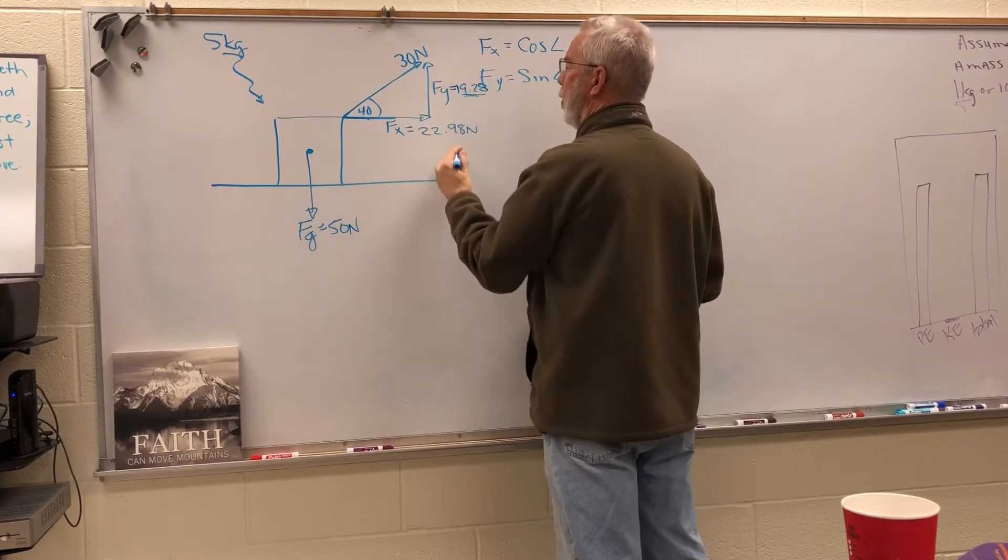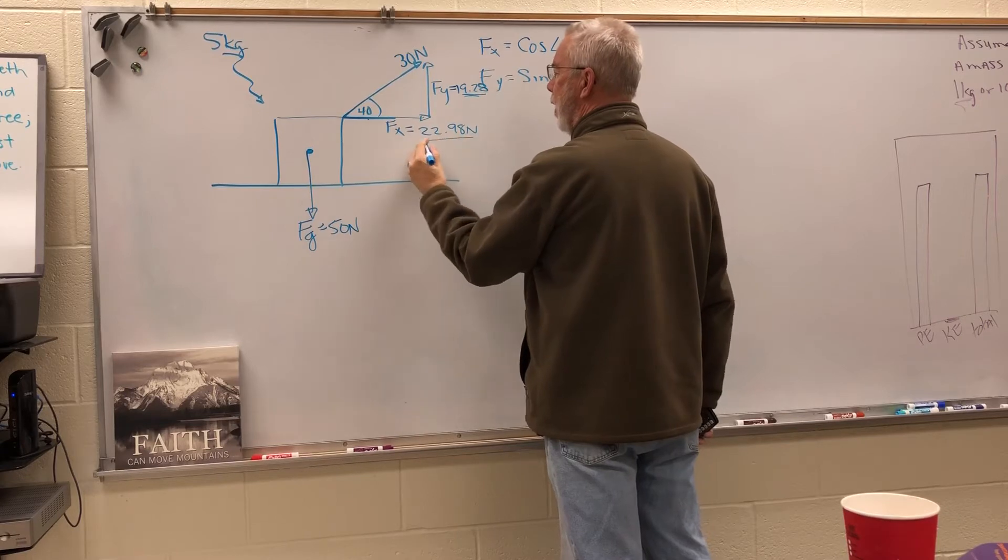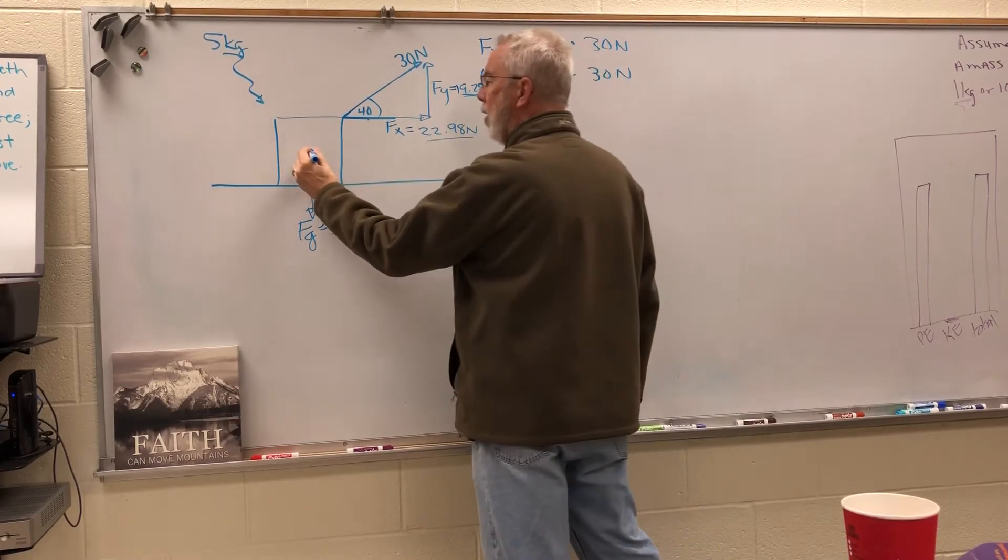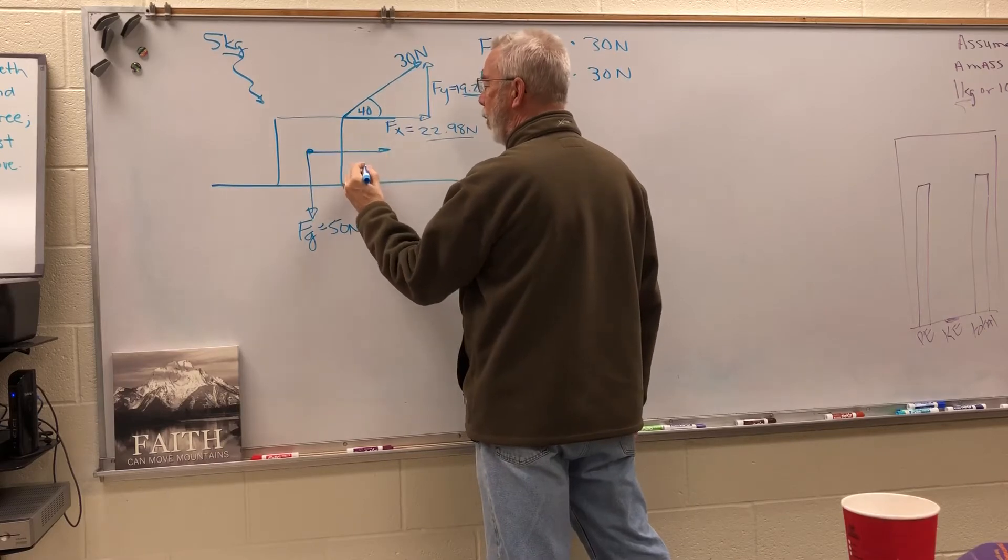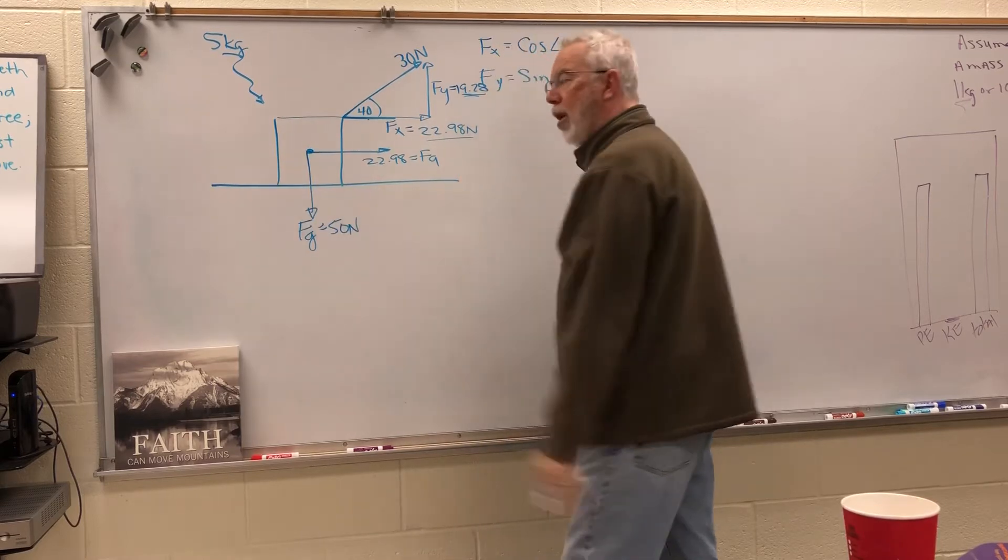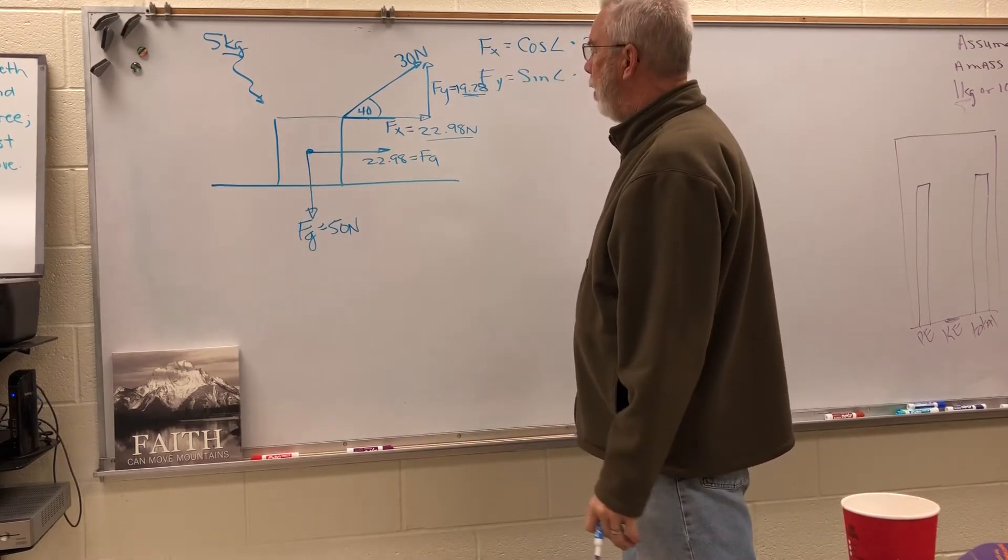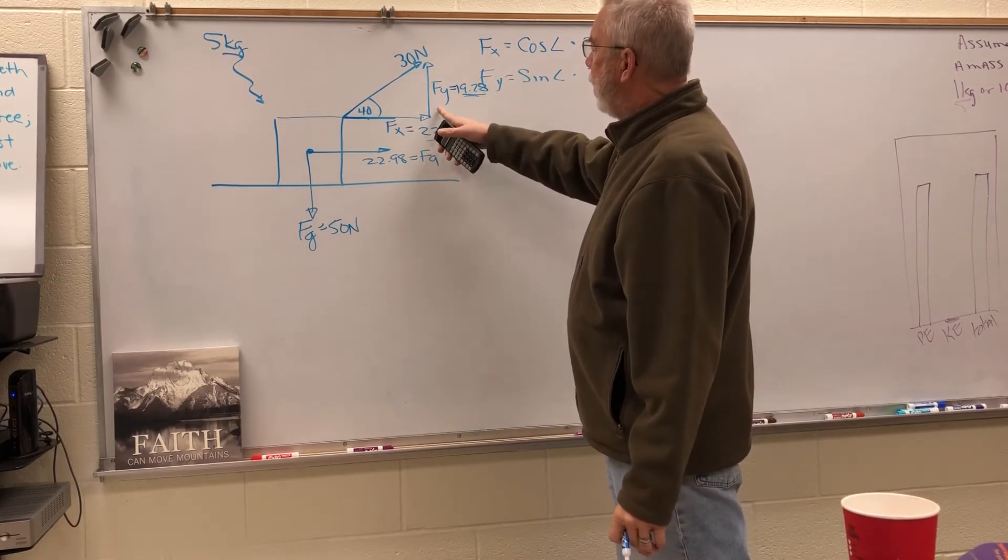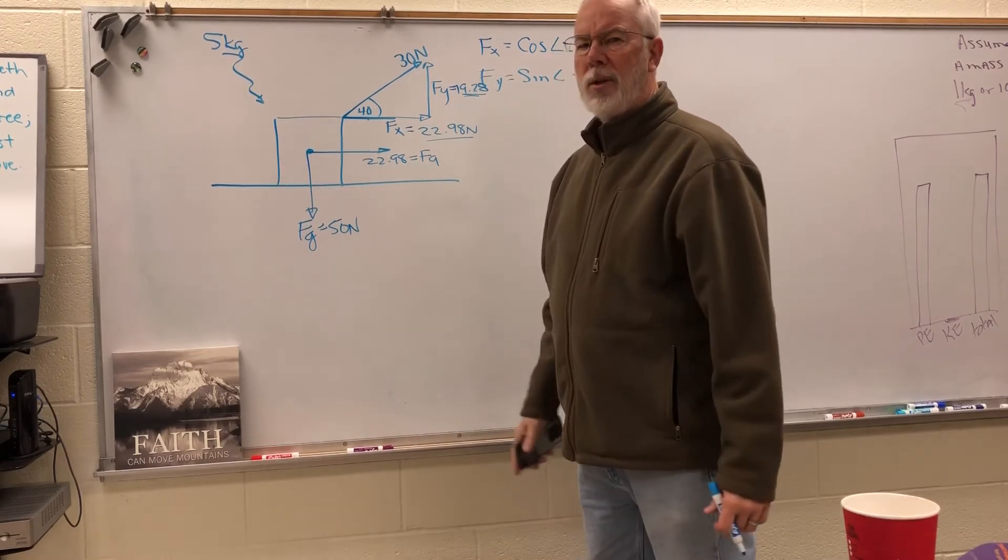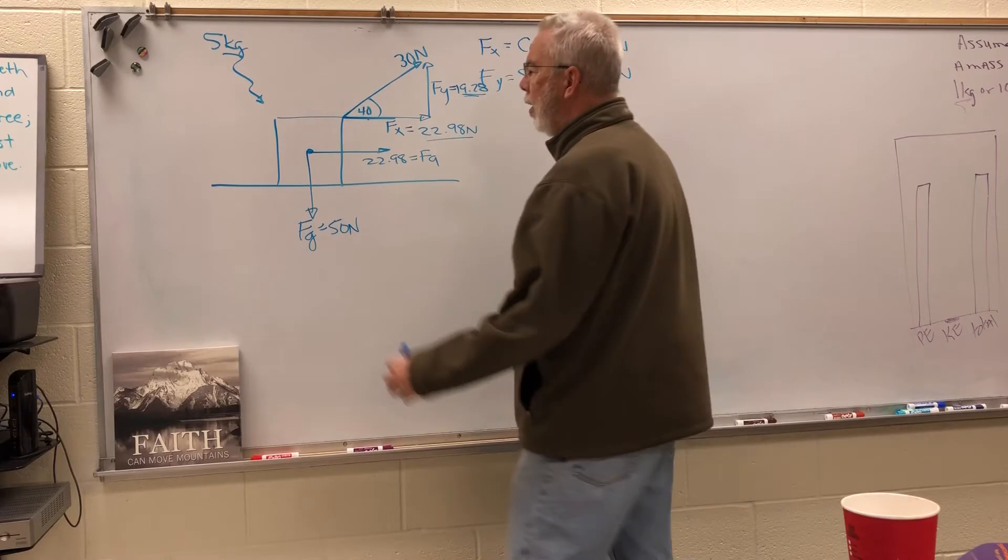The x value right here is 22.98 newtons, and y is going to be 19.28. So the force in the up direction is 19, and the force horizontally is 22. As it turns out, 22.98 is going to be the applied force which is going to cause the box to move to the right. But you can see that the F of y is a force that's pulling up on the box.